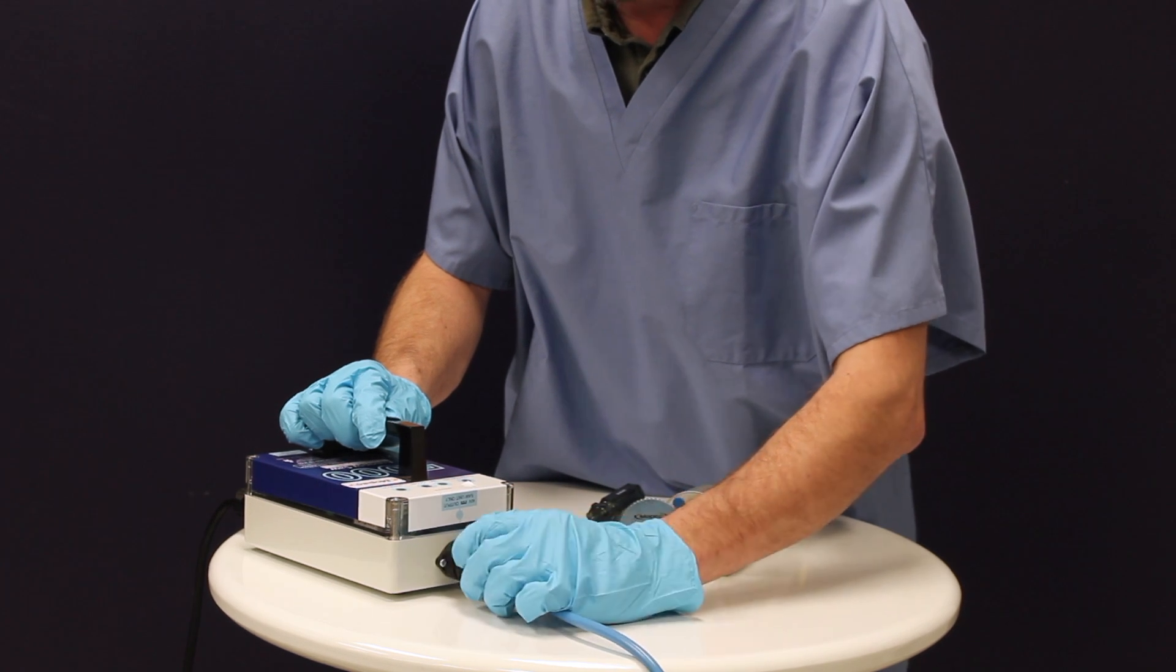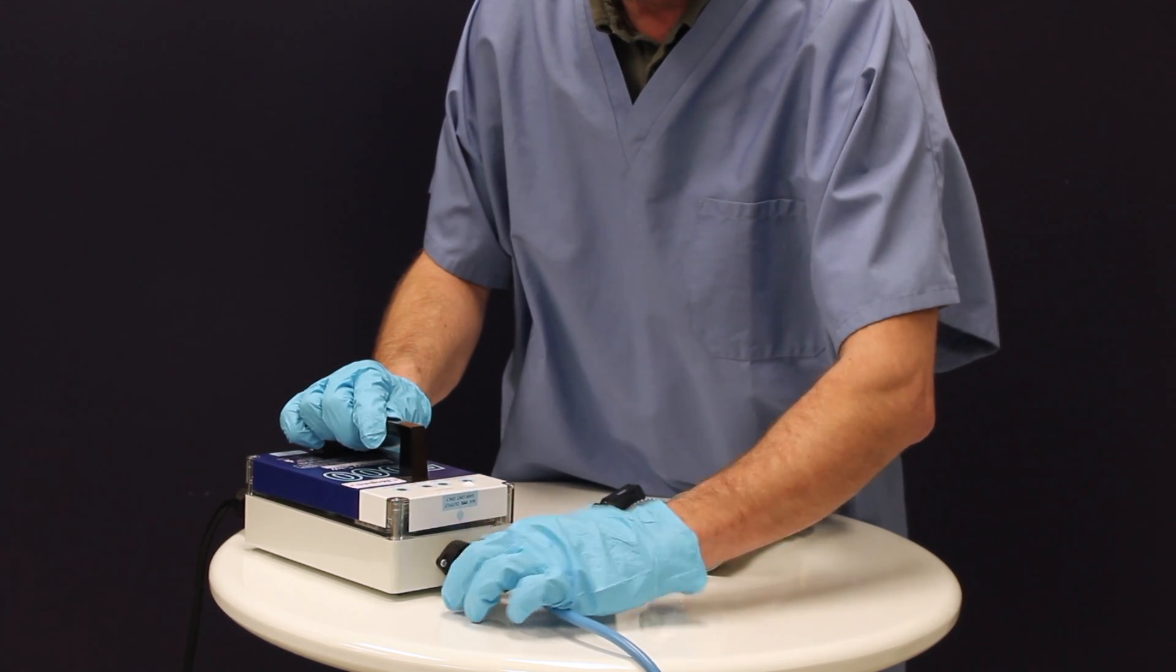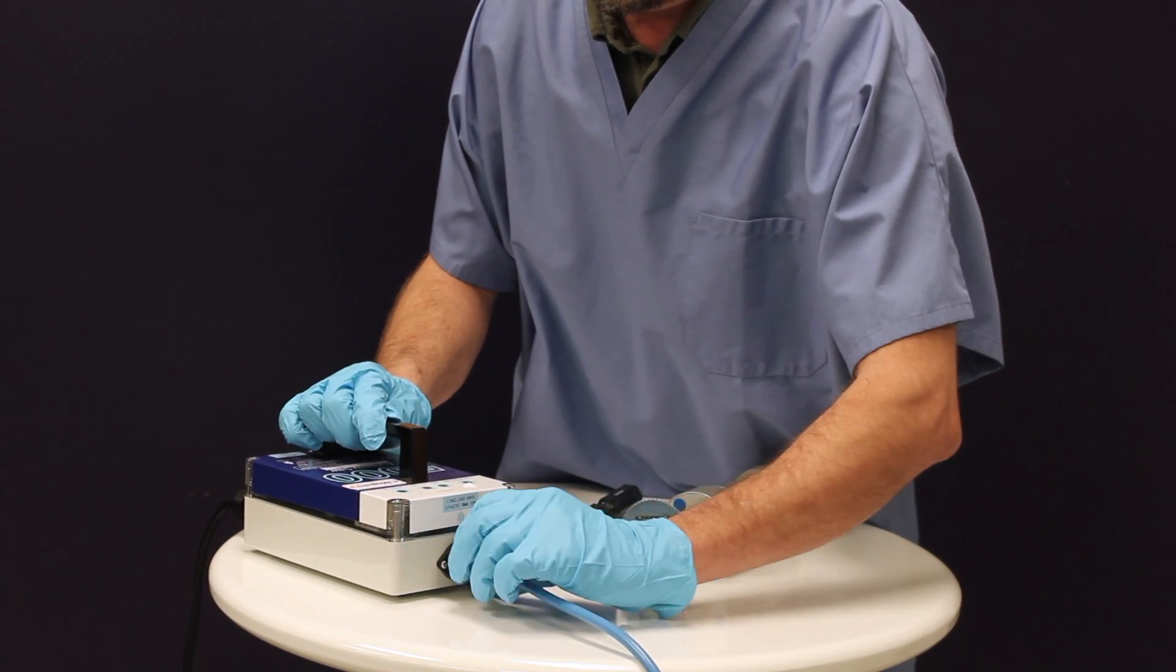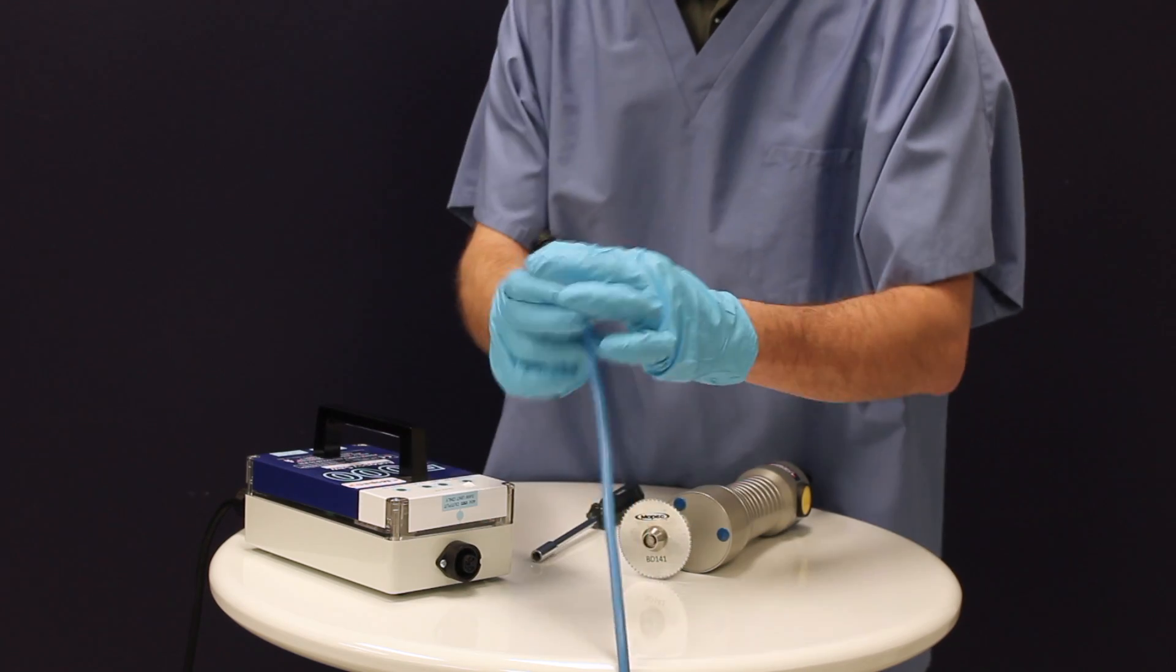When troubleshooting or changing the blades on your autopsy saw, make sure your power source is powered off. If you need to disconnect from the power source, remove the cord by twisting counter clockwise.